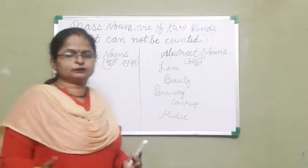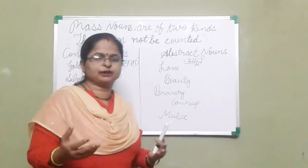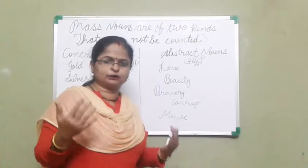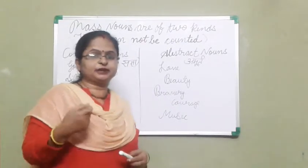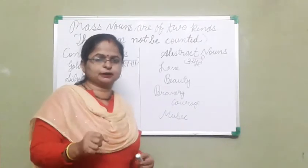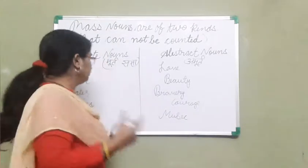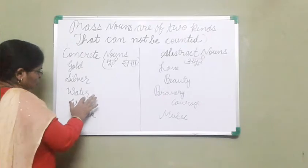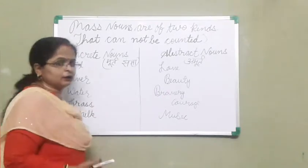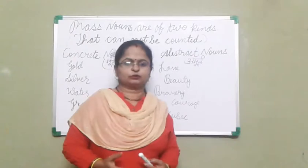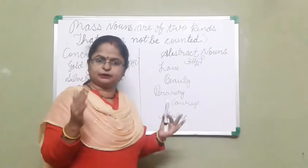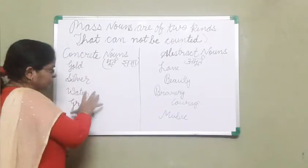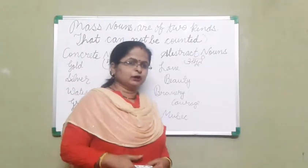Concrete nouns are those nouns which cannot be counted, but we can touch them and we can see them. So these are concrete nouns — for example, gold, silver, water, grass, milk, and curd. So these are concrete nouns, which are uncountable nouns.